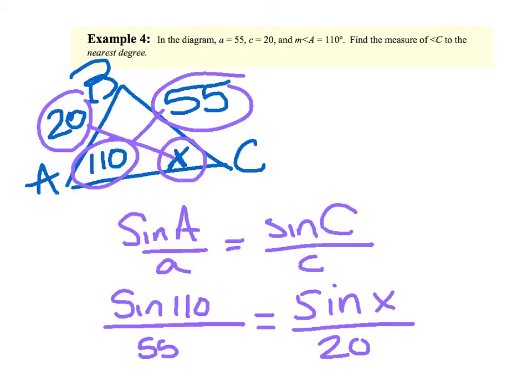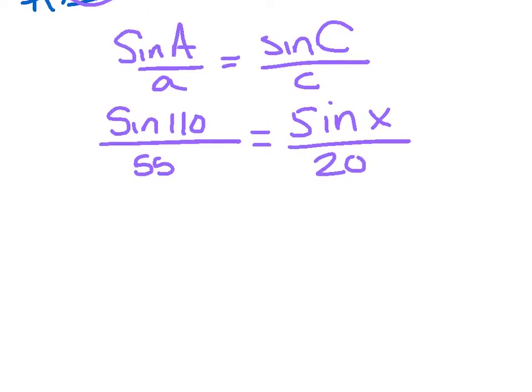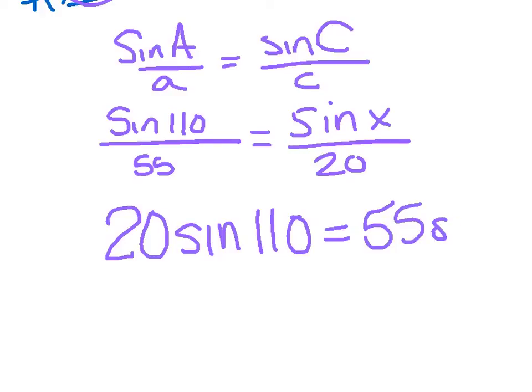I've got sine of A, which is 110, over 55, equals sine X over 20. Now this one's different. We have sine X instead of X being by itself. So we're going to continue the same way. We're going to cross multiply. So I've got 20 sine of 110 equals 55 sine X.